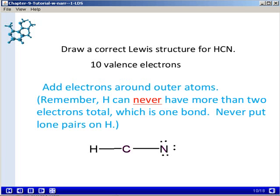And then we'll add electrons around the outer atoms. Remember, though, that hydrogen can never have more than 2 electrons total, which is 1 bond, so never put lone pairs of electrons on a hydrogen atom. So all the remaining electrons would go on the outer nitrogen atom in this case.